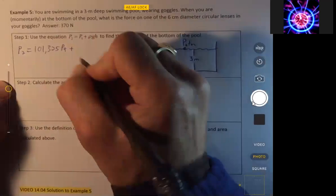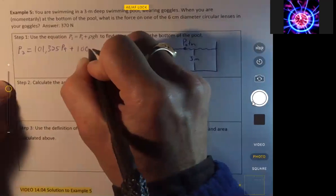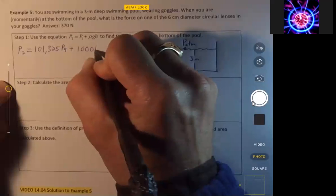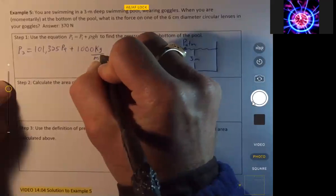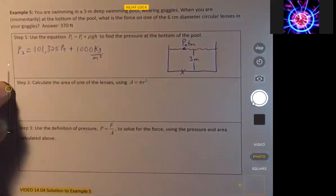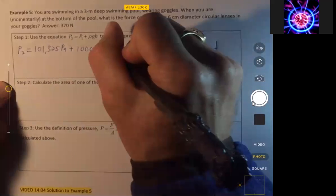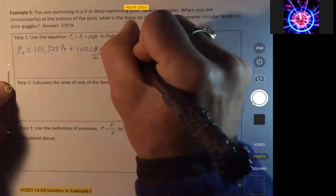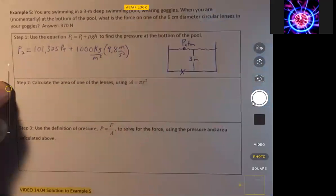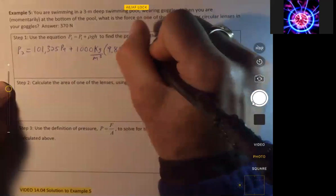plus the density of water, and it's in a swimming pool, so just regular water or fresh water, not salt water, 1000 kilograms per cubic meter times the acceleration due to gravity, and g is a scalar, and then times three meters.